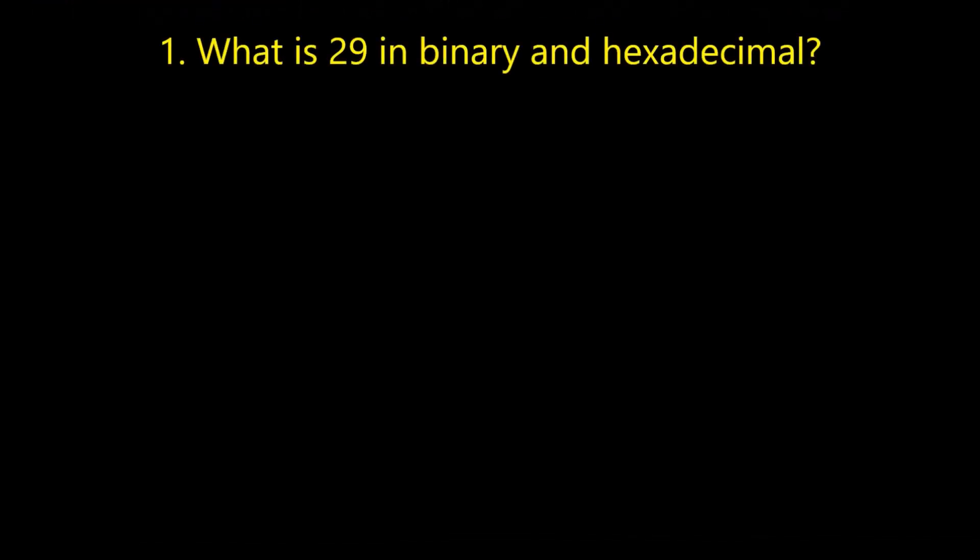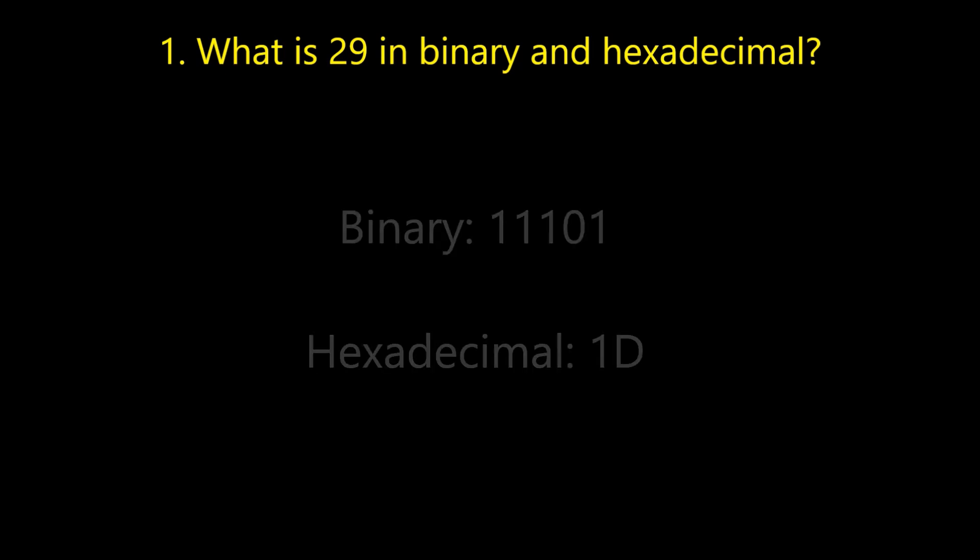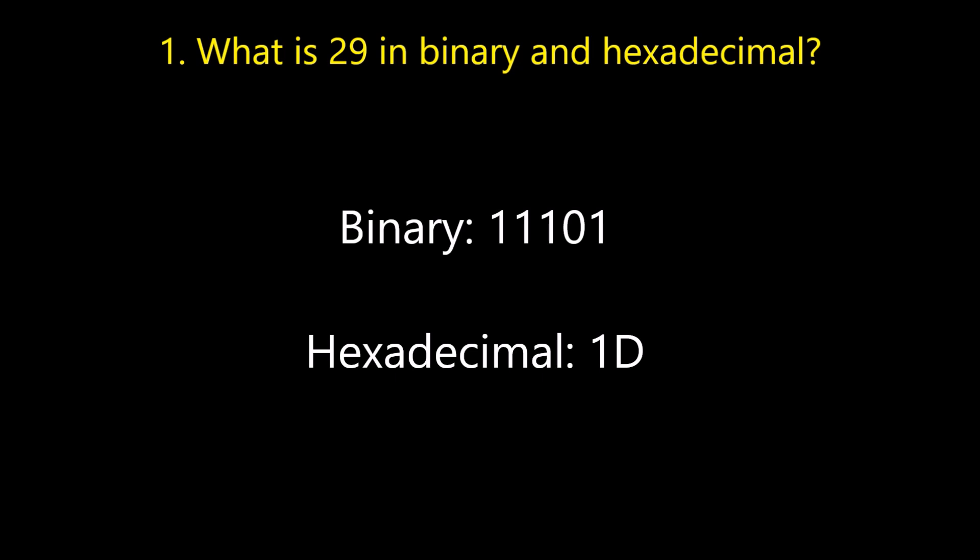Question number one: what is 29 in binary and hexadecimal? In binary it's 11101. In hexadecimal it's 1D.